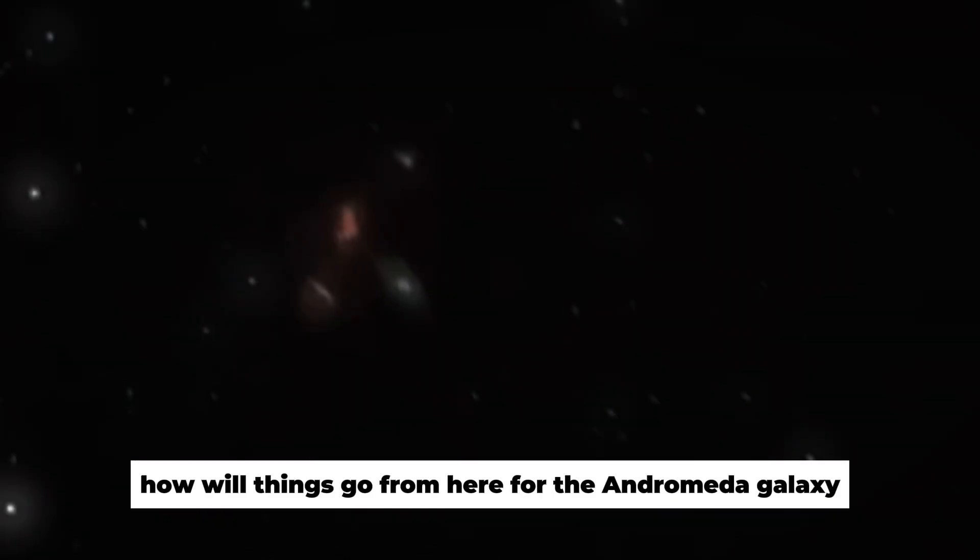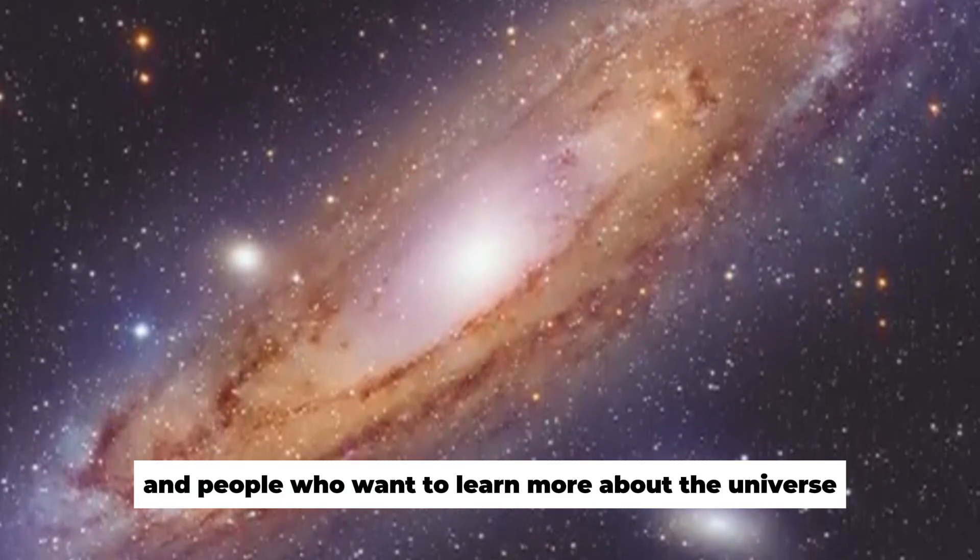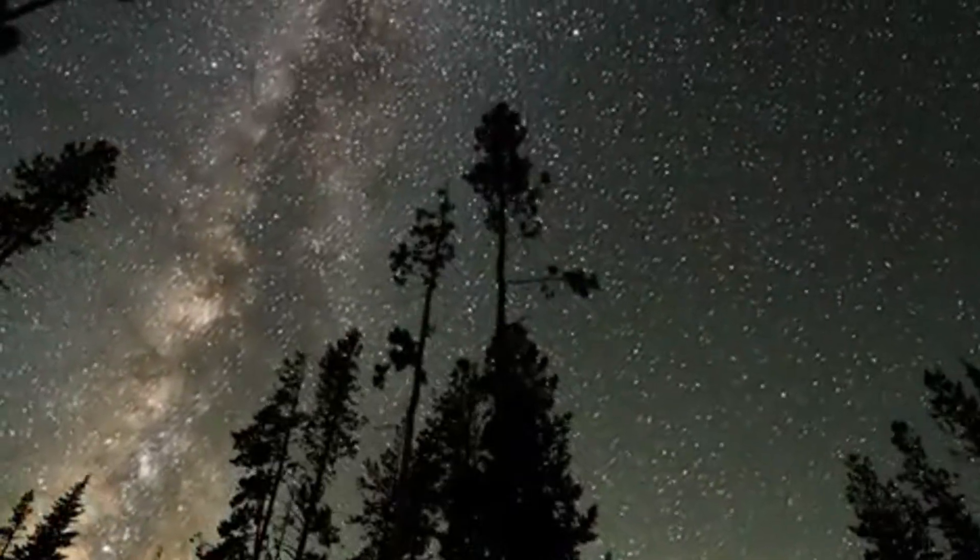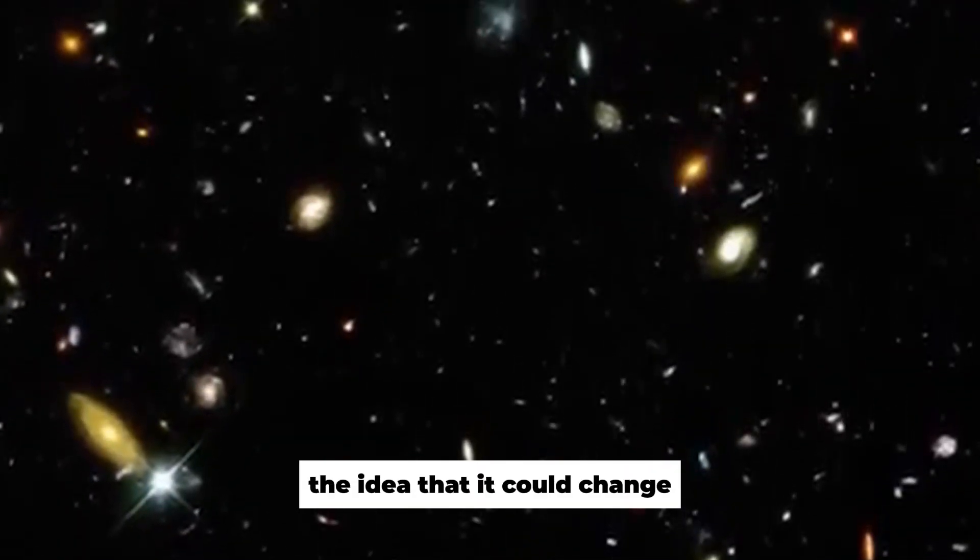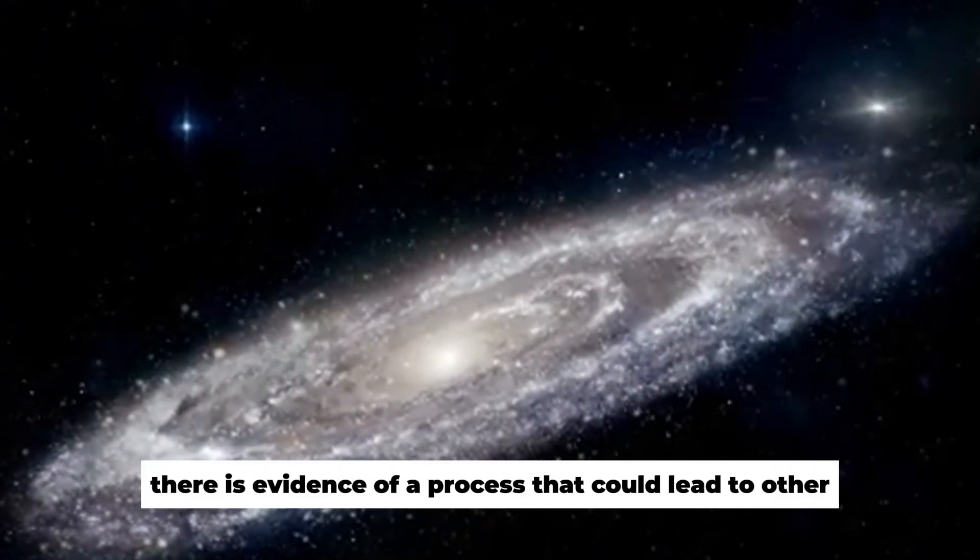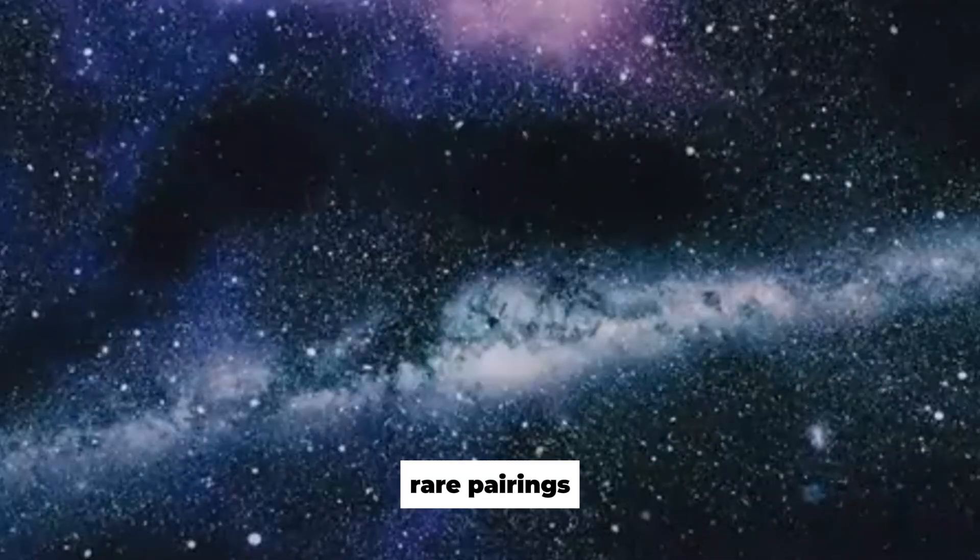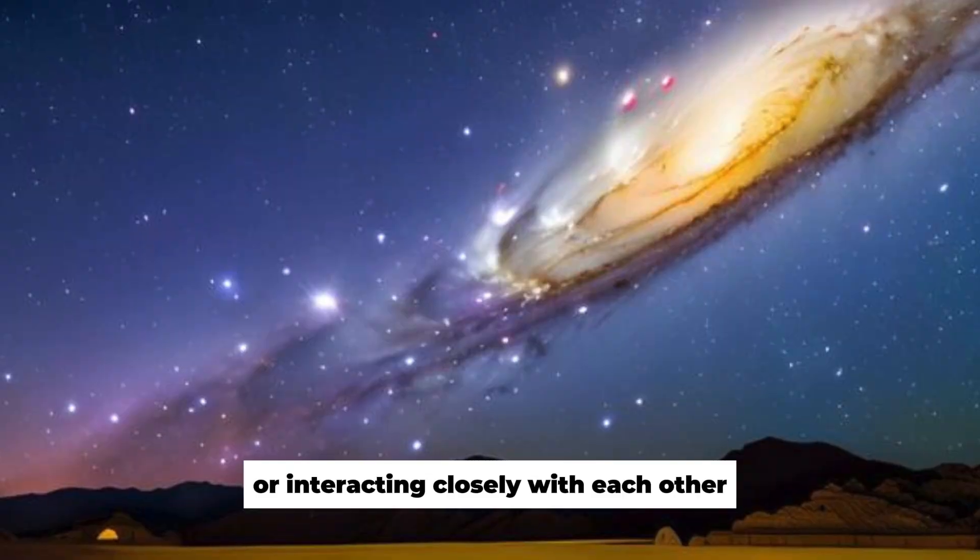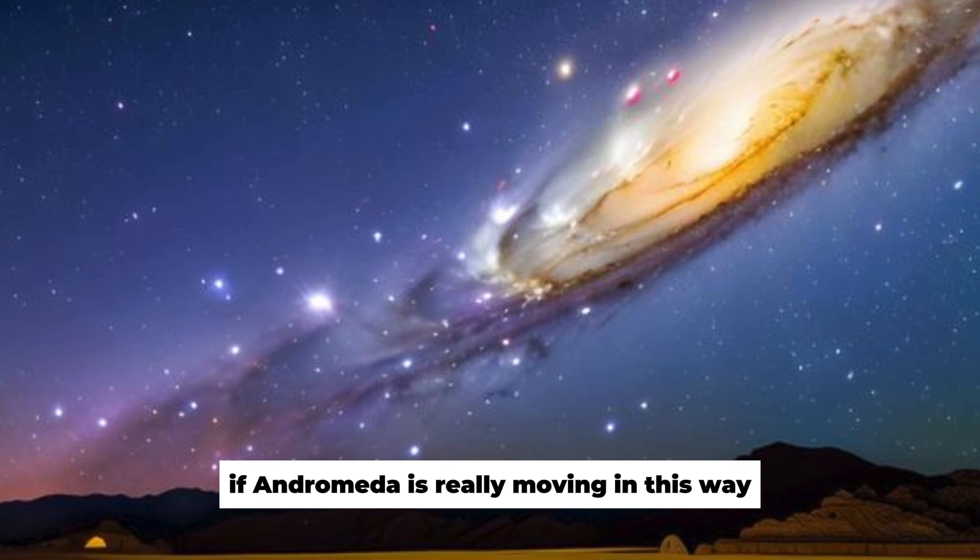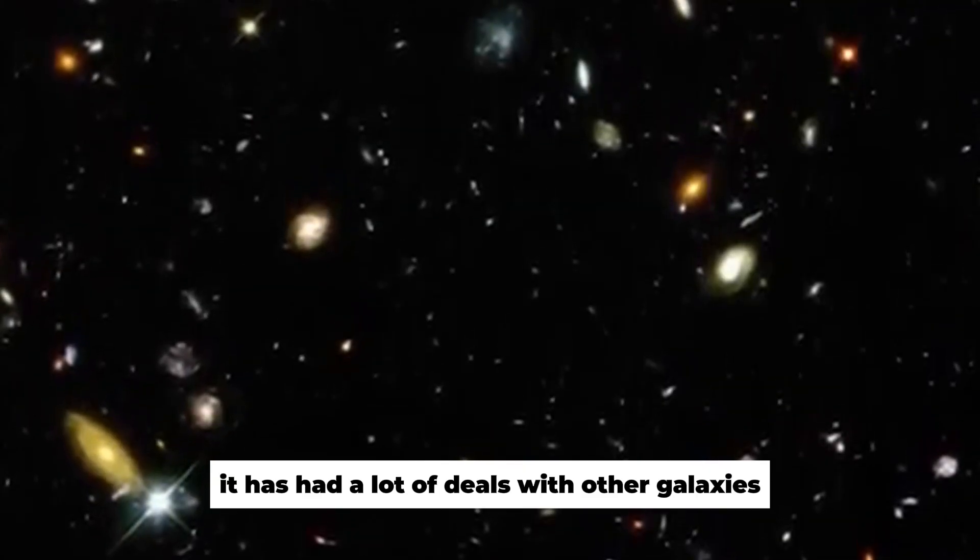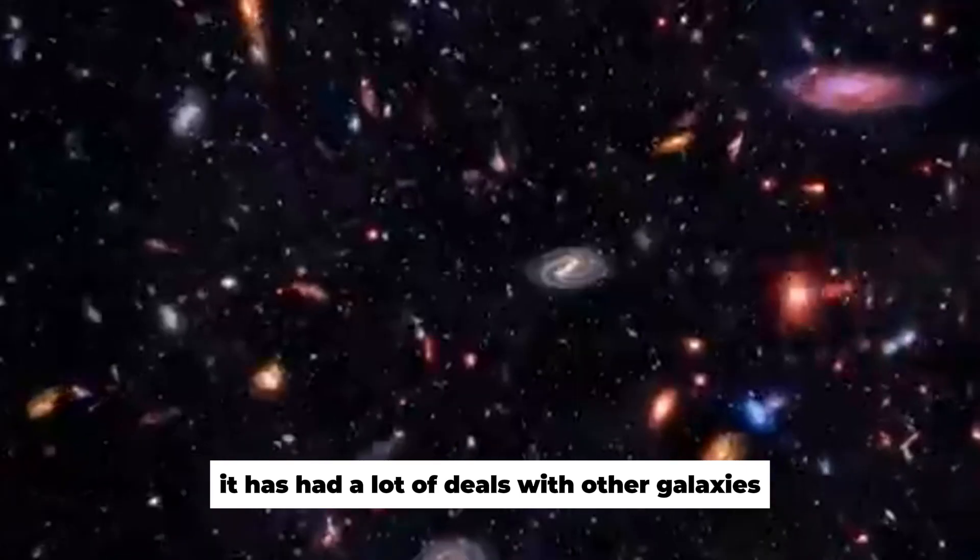How will things go from here for the Andromeda galaxy? Astronomers and people who want to learn more about the universe are both interested in its shape and the way it moves. Andromeda's growth is based on the idea that it could change from a spiral galaxy to a ring galaxy. There is evidence of a process that could lead to other rare pairings. This process could be caused by galaxies colliding or interacting closely with each other. If Andromeda is really moving in this way, it means that since it was born, it has had a lot of deals with other galaxies.